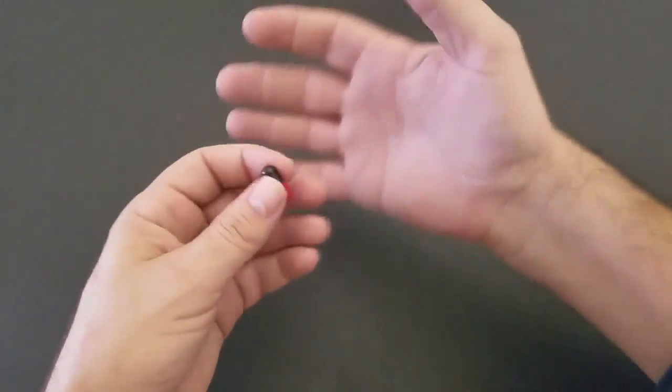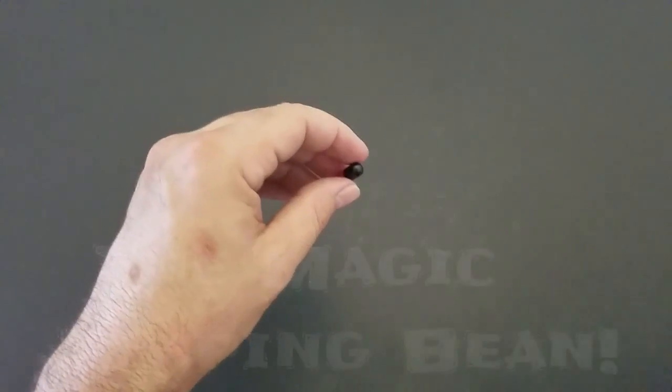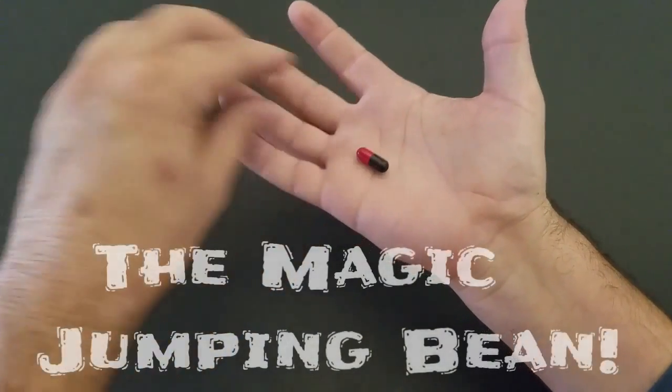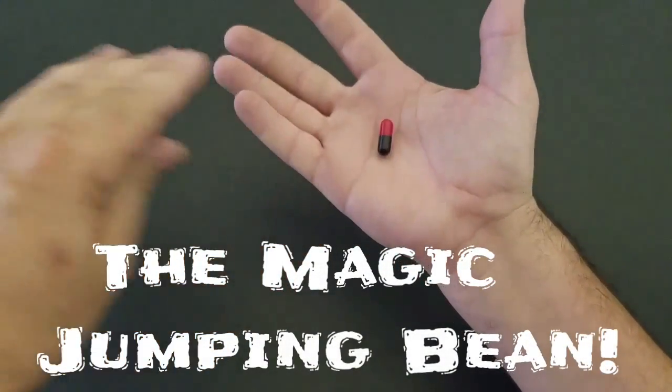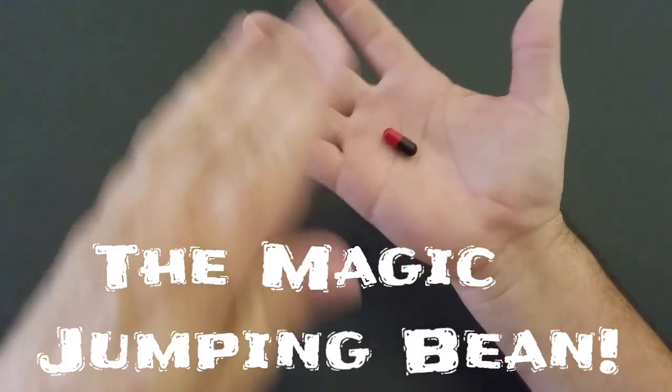Our next magic trick is gonna be about a magic pill. You place it right there and it floats. Actually, it doesn't, it actually comes to life. It moves around, it looks really cool. Okay, here's the magic jumping bean.